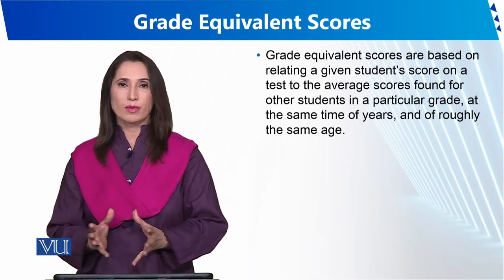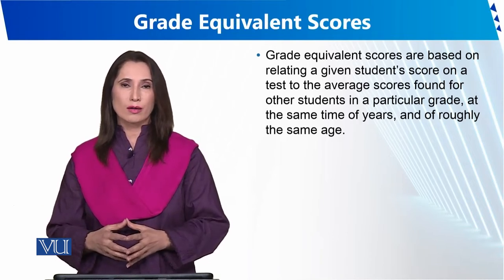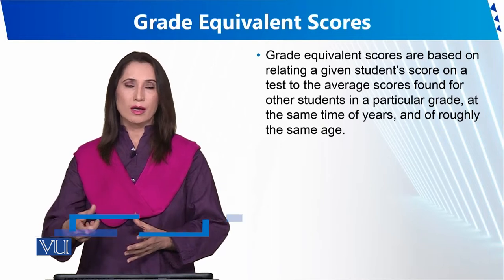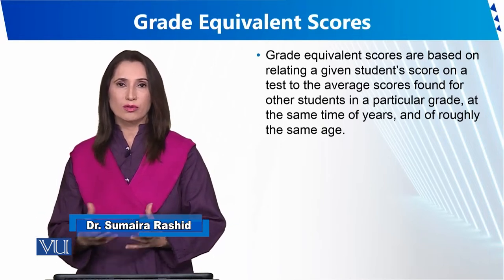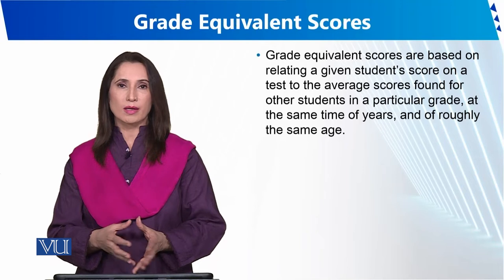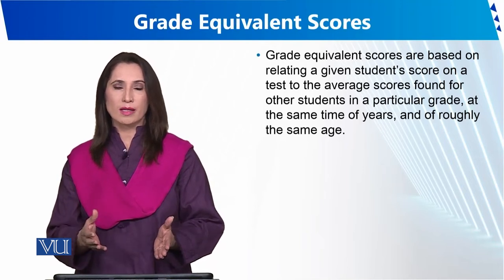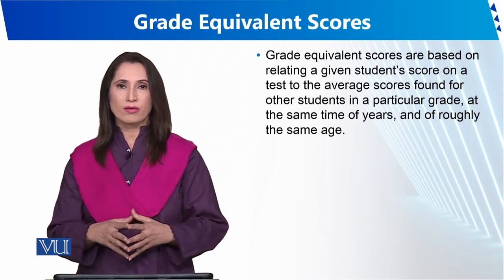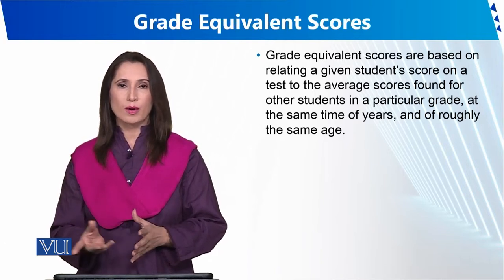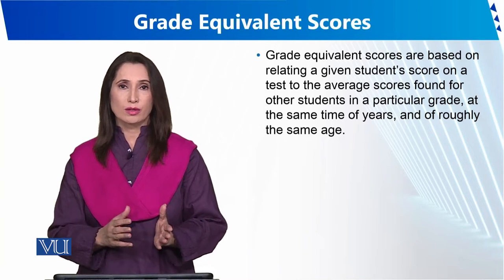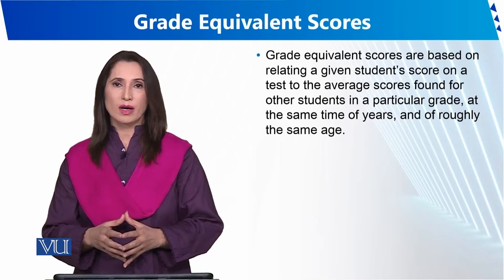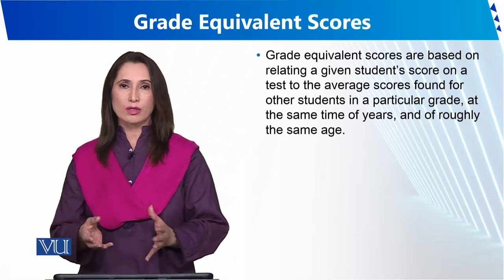Grade Equivalent Scores basically यह है कि अगर एक बच्चे ने test में 10 में से 7 marks लिए हैं, तो उसी subject या topic पर अगले 6 months बाद दोबारा test लिया जाए और उसमें भी 7 आए, तो grade equivalent score 7.6 होगा। Point के बाद जो digit है वो बताता है कि कितने months बाद test repeat हुआ है।